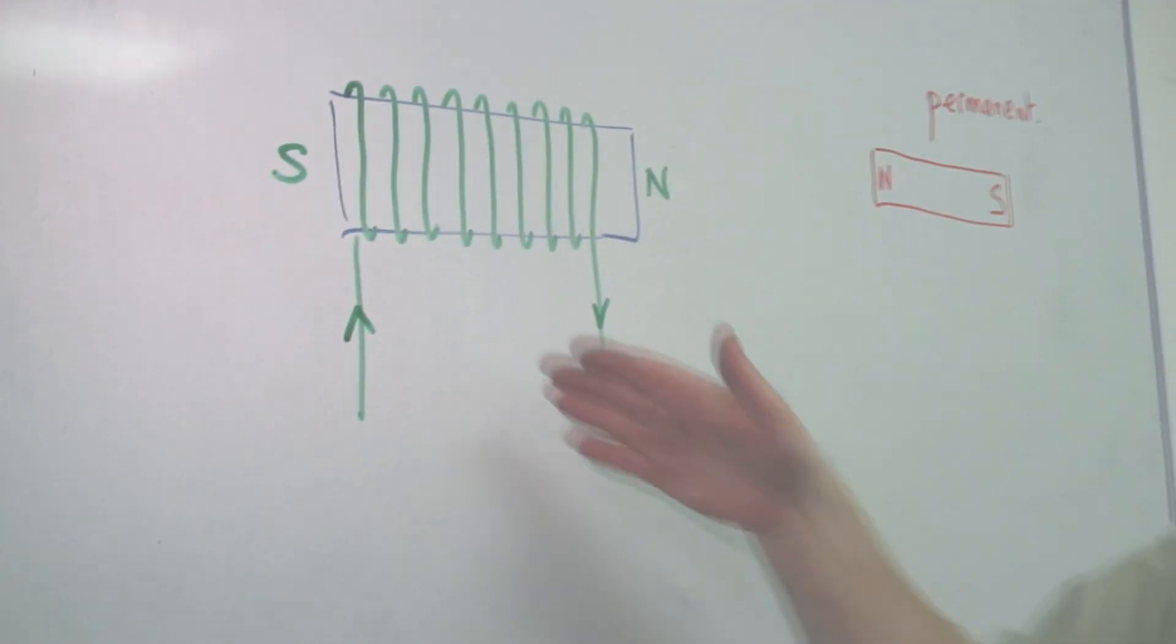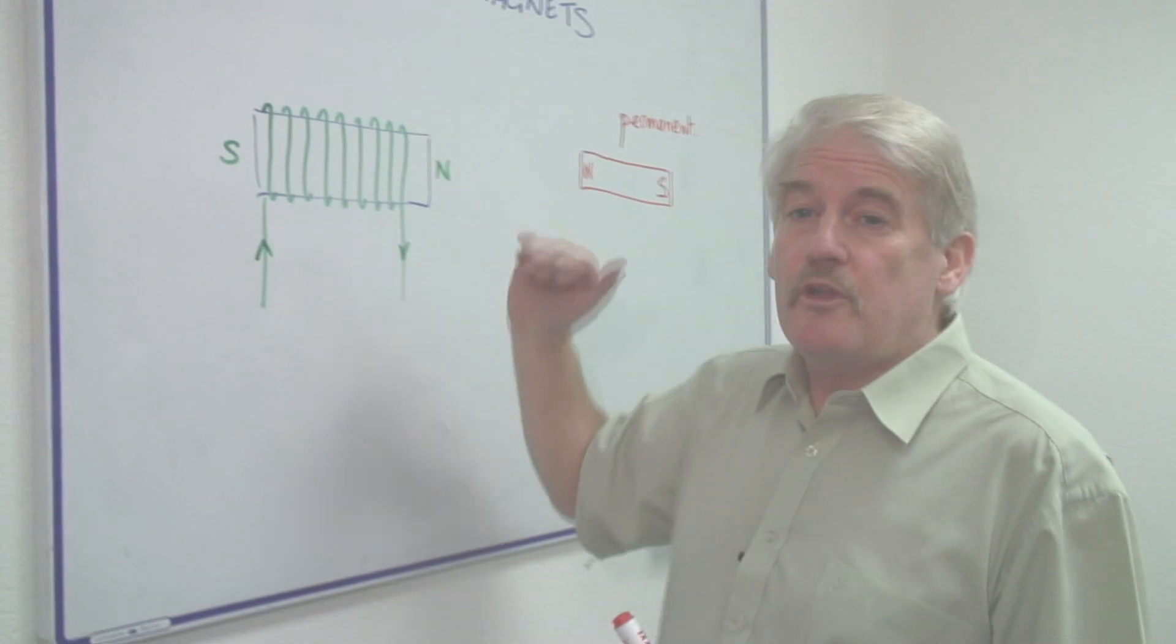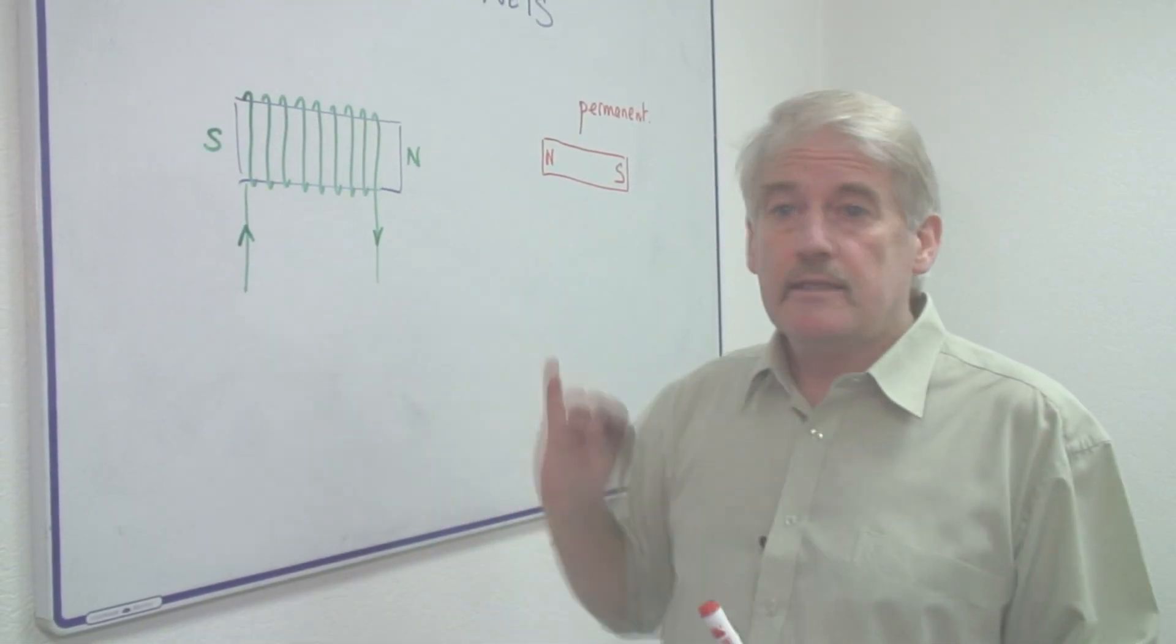I will get a north at one end and a south at the other as the current travels through it. When I switch it off, I get no magnet.